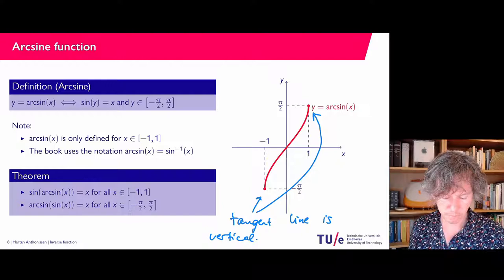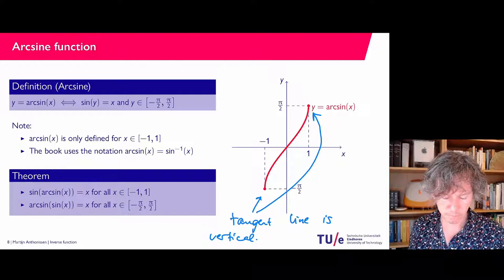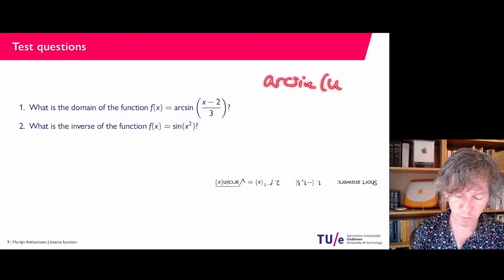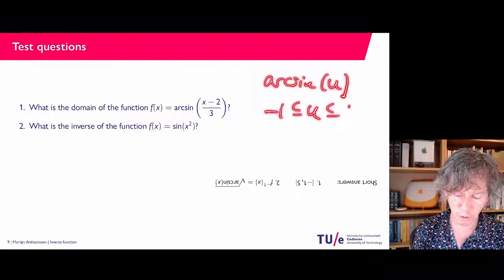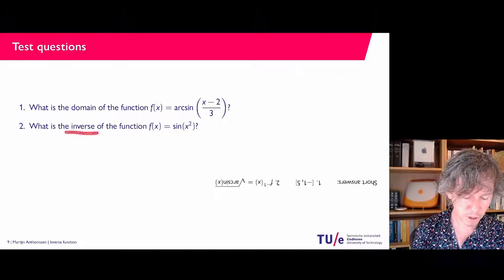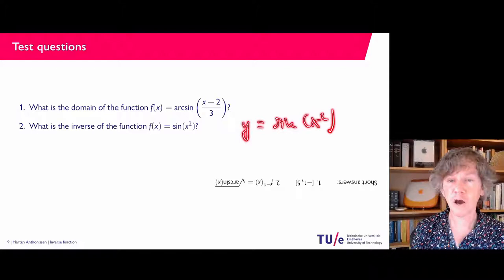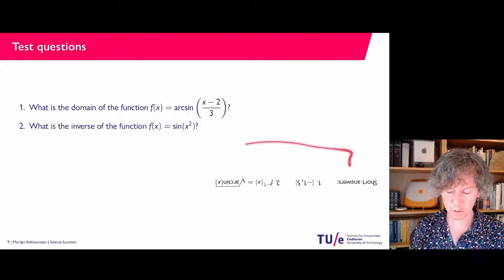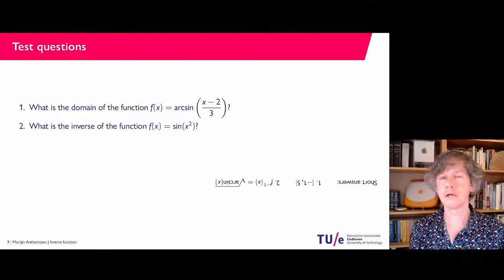Here are a few questions you could try yourself. The first one asks for the domain of a given function involving arcsine. Recall that arcsine of a general variable u is defined only for minus one less than or equal to u less than or equal to one. To find the inverse — it is given that an inverse exists, so you don't have to prove that — write y equals sin(x squared) and try to solve x as a function of y, as I did in the earlier example. The answers are given upside down so you can check.